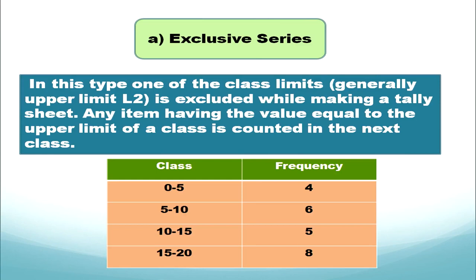The very first type is exclusive series. In this type, one of the class limits — that is, the upper limit — is excluded while making a tally chart. Any item having a value equal to the upper limit of a class is counted in the next class. Also, the class interval — the difference between each class — remains the same.